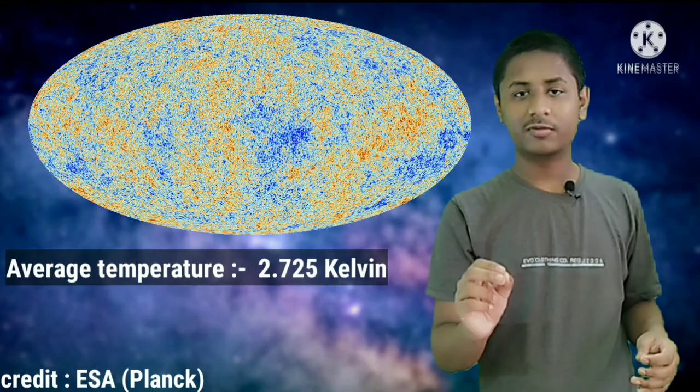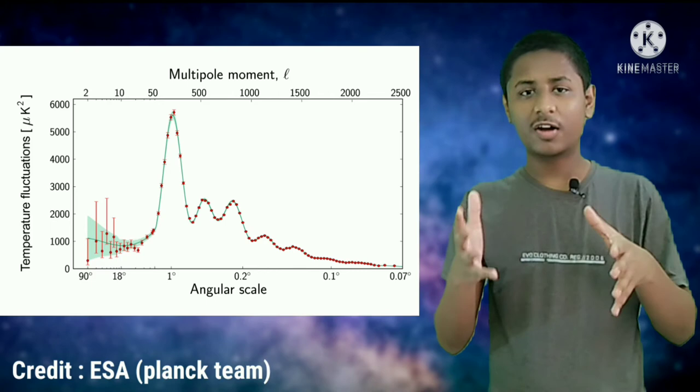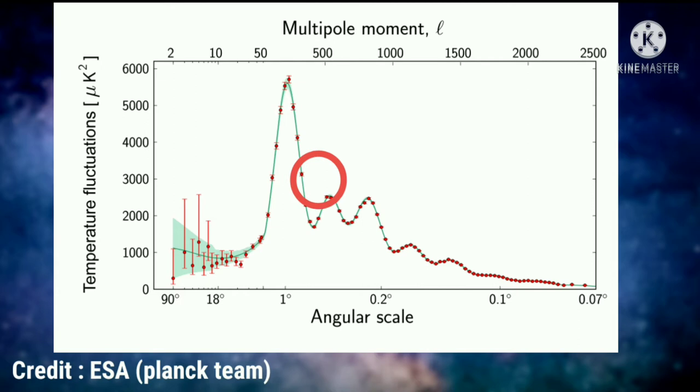The temperature of this radiation is almost the same everywhere, but not exactly. The average temperature is about 2.725 Kelvin, but some spots are a tiny bit colder and some a tiny bit hotter. These fluctuations in the temperature of the CMB allow us to predict the composition of the universe at that time. There is something called a power spectrum — a kind of graph of the temperature anisotropies of the CMB. The first peak of this graph contains information about the curvature of the universe, the second peak contains information about the baryon density, and the third peak contains information about the dark matter density.